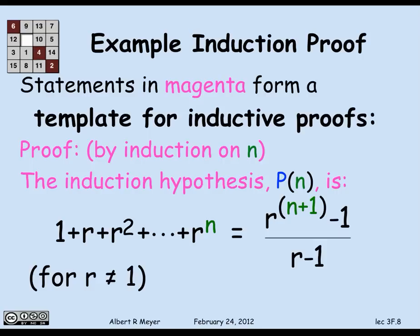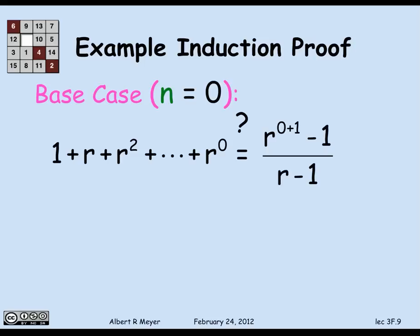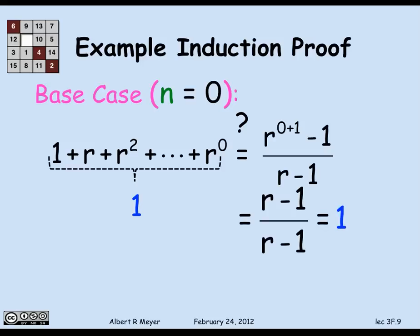Having stated the induction hypothesis, the first thing to do is the base case: prove it for n equals 0. When n is 0, the left-hand side is just r to the 0, which equals 1. The right-hand side is r minus 1 over r minus 1, which is also 1 since r is not 1. So it checks out, and the case n equals 0 has been proved.